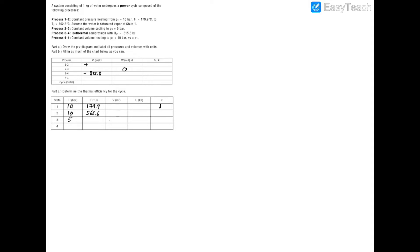Process 4 to 1 is constant volume heating, so the work for process 4 to 1 is also zero kilojoules — I'll show analytically why that work turns out to be zero for a constant volume process. Because it's constant volume, V4 equals V1. Looking at the cycle totals in the first table, you can always zero out the cycle change in internal energy, because if you apply the first law of thermodynamics the heat transfer minus the work equals zero.